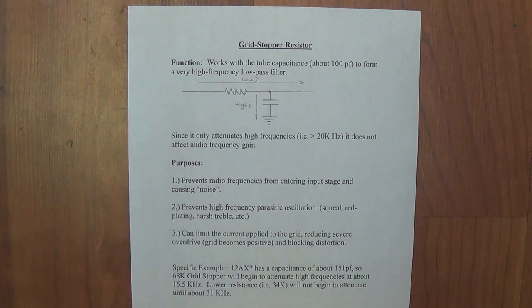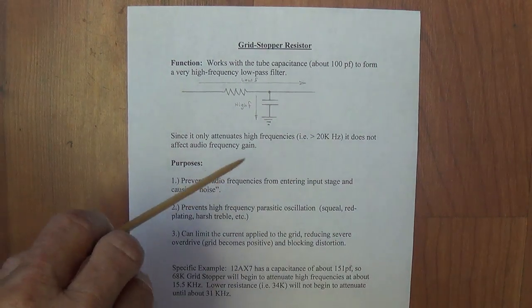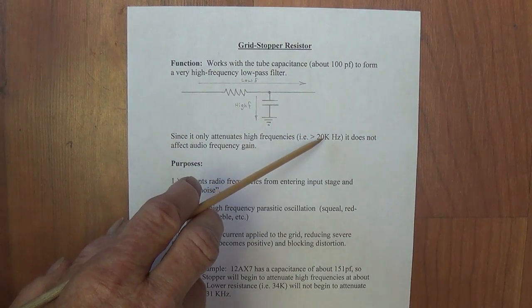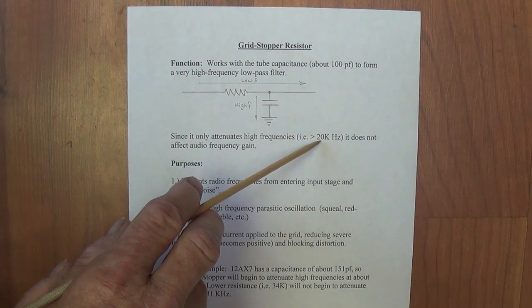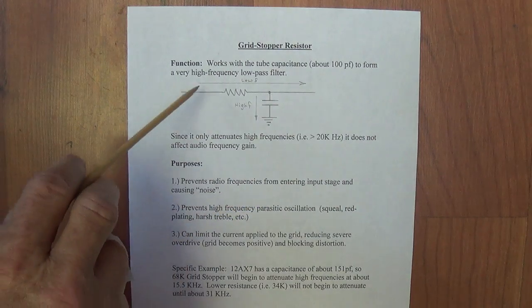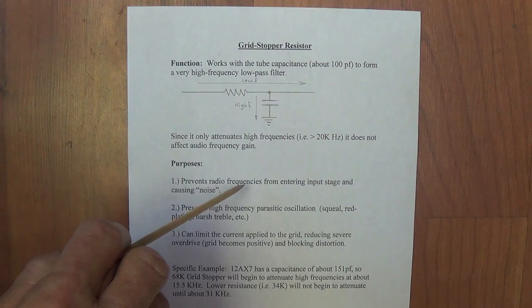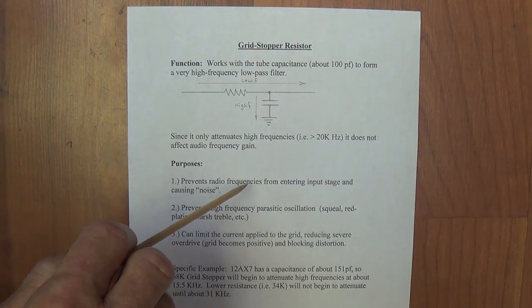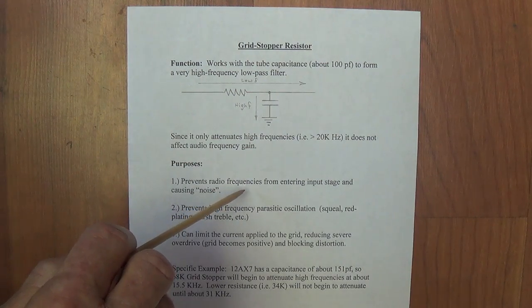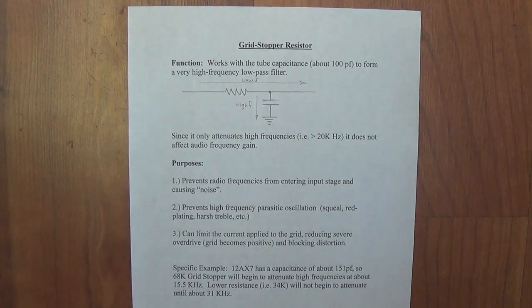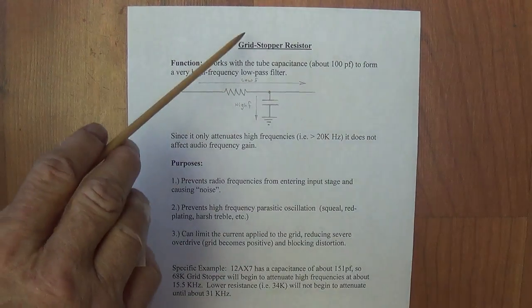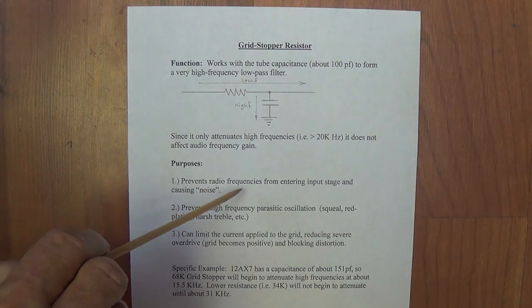So, you're saying to yourself, well, if I can't hear them, what do I care? Well, you do, because radio frequencies are much higher than audio, but they can enter the input stage of your amplifier, become rectified within the input stage, and amplify and create radio frequency noise. The grid stopper resistor will effectively prevent this.